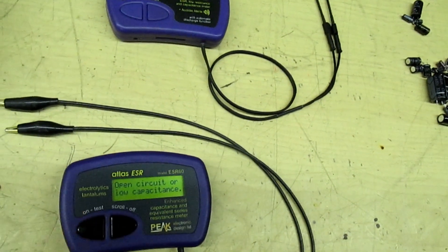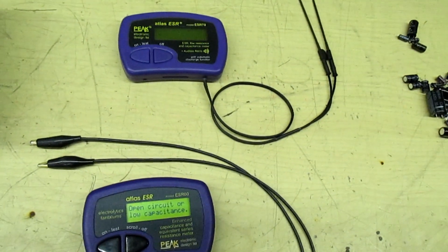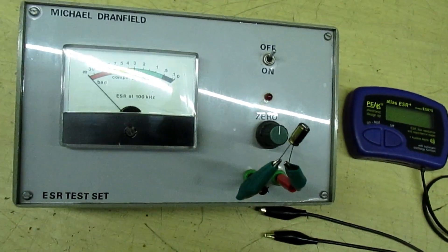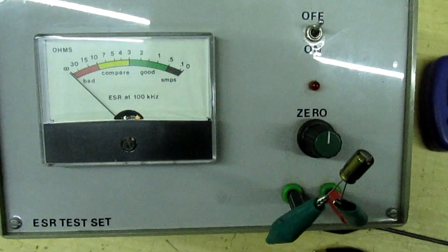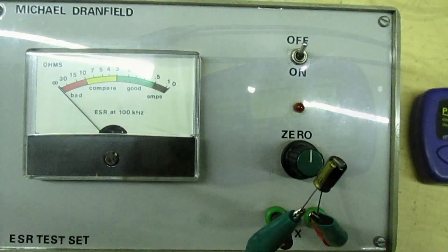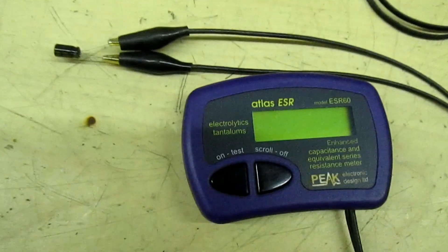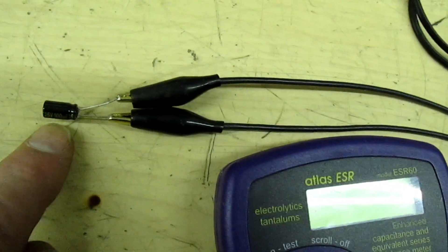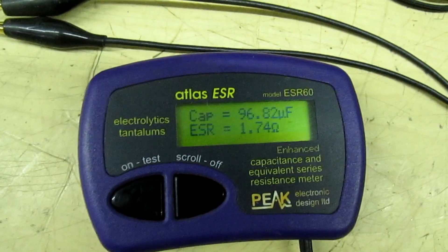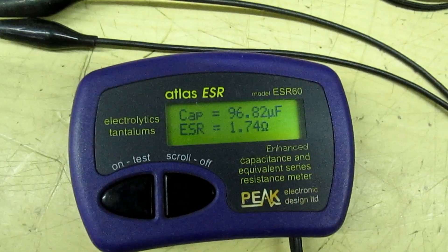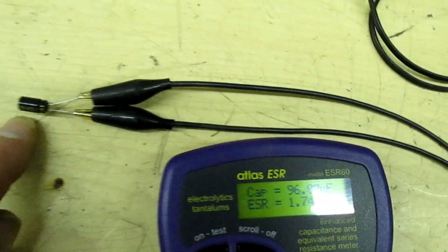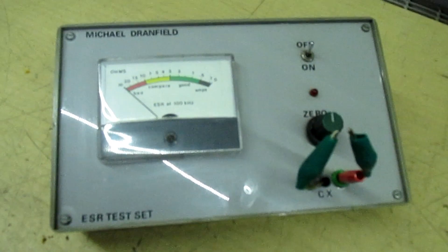This only takes a reading when you press the button, so we're going to need a meter that continuously takes a reading. I'm going to move over onto this meter I built about over 20 years ago. Before we set off, we're just going to check the accuracy of it against one that my friend Jeremy makes. I've connected a brand new 100 microfarad, 25 volt capacitor to the tester.